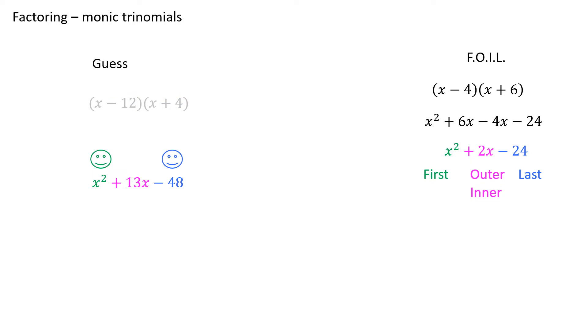Now to check if your guess works, we're going to try the outer and inner product and see if we get a result of 13x. The outer product is 4x. The inner product is negative 12x, which begs the question, do those terms combine to make 13x? Well, they combine to make negative 8x, so no, they don't combine to make 13x.